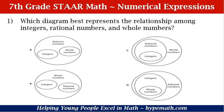Let's look at D, which is kind of similar to C. The large circle is labeled rational numbers, then there's another circle inside of that labeled integers, and the smallest circle is labeled whole numbers.